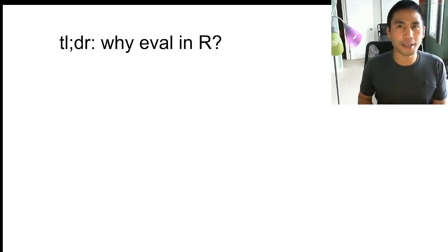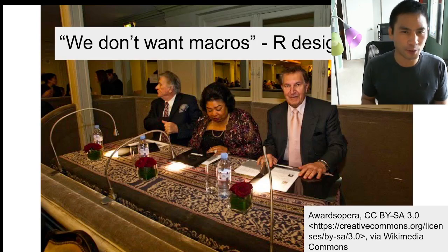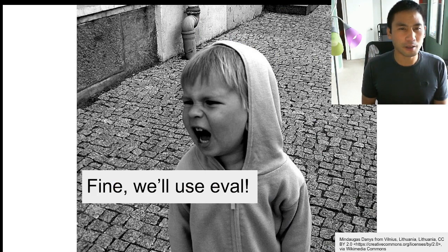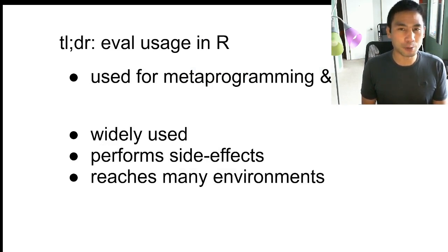Why does eval happen in R? The R designers decided they didn't want macros. So language and library creators say, fine, we'll use eval. Eval in R is used for metaprogramming as well as domain-specific languages. It's widely used, performs side effects, and reaches many environments.